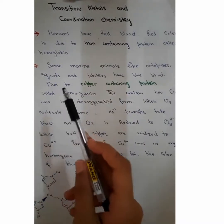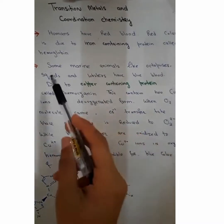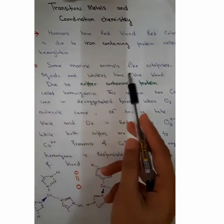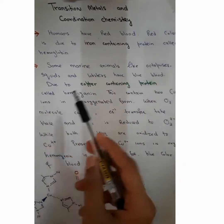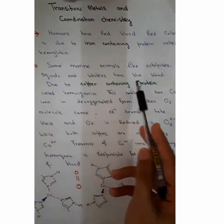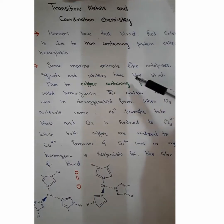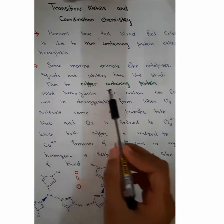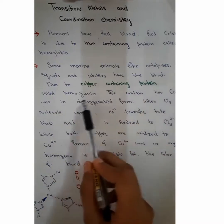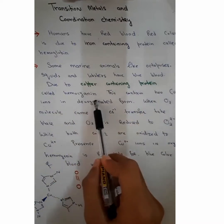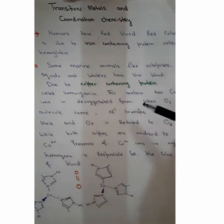Now let's talk about other animals. Some marine animals like octopus, squid, and lobsters have blue blood. The blue color of the blood is due to a copper-containing protein called hemocyanin. So red and blue colors are due to different transition metals.